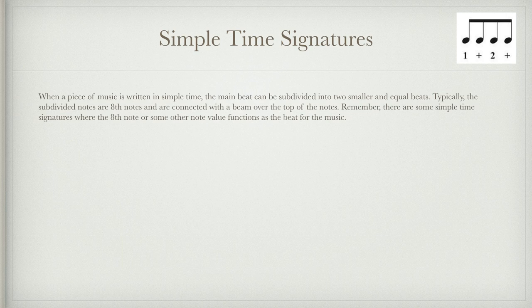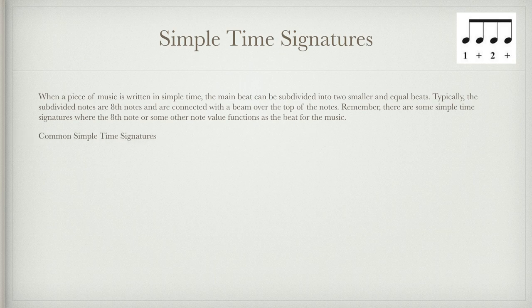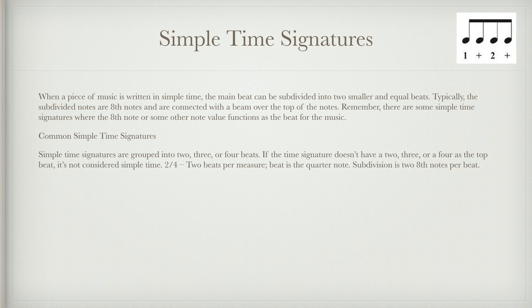In simple time, the main beat can be subdivided into two smaller equal beats. Typically the subdivided notes are eighth notes connected with a beam. Remember, there are some simple time signatures where the eighth note or another note value functions as the beat. Your most common simple time signatures are grouped into two, three, or four beats. If the top number is not a 2, 3, or 4, it is not considered simple time.